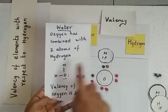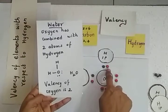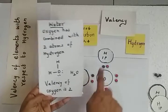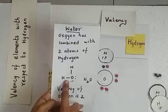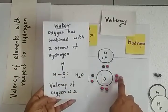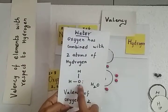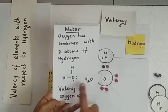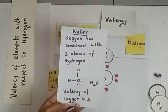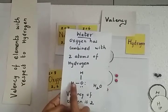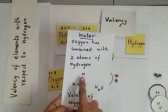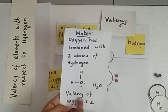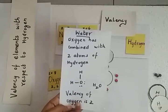Two electrons — one from oxygen and one from hydrogen — are represented with a bond (a single line). We also have 2 lone pairs of electrons on oxygen, represented with 2 dots. This is how we find the valency of an element with respect to hydrogen. Since oxygen combines with 2 atoms of hydrogen, the valency of oxygen is 2.